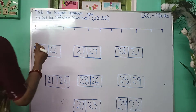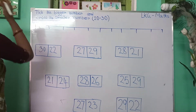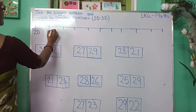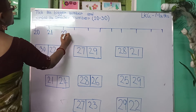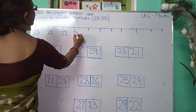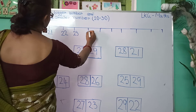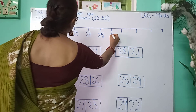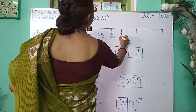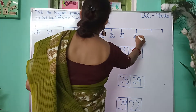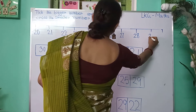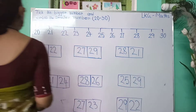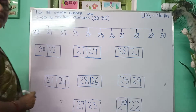I have drawn a number line. Now I will put the numbers. At first, 20, after 20 is 21, 22, 23, 24, 25, 26, 27, after 27 is 28, after 28 is 29, then 30. 20 is the first number and 30 is the last number.